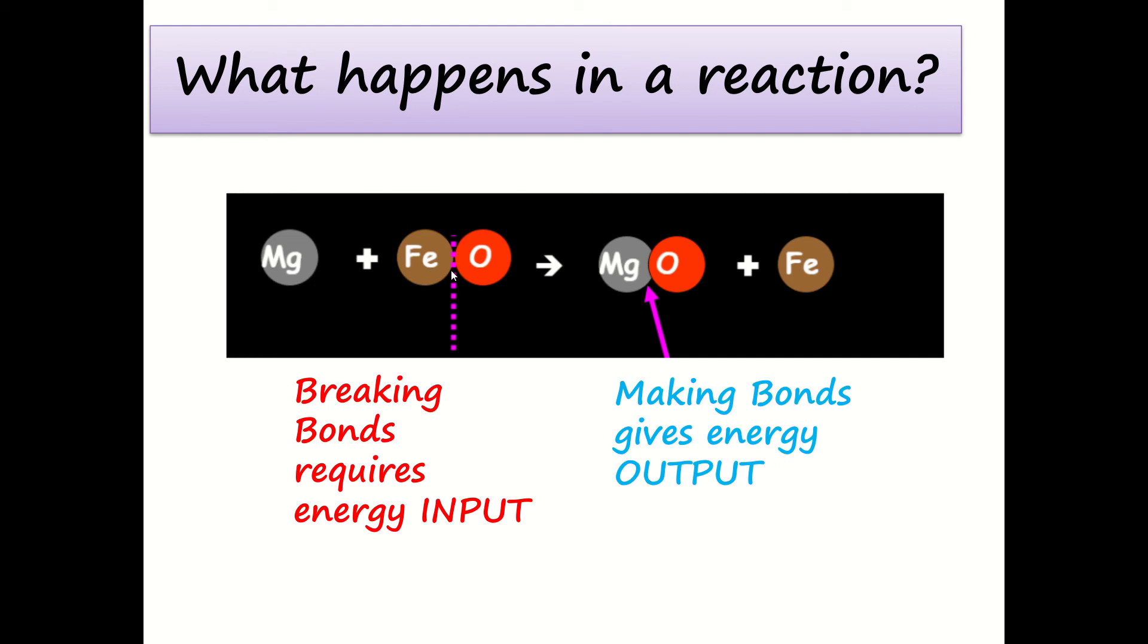Then once we've broke them, we are rearranging the atoms and we are forming some new products. So look at our products now. We've got magnesium oxide and we've got iron. So we've made new bonds between the magnesium and the oxygen. Now, making bonds gives energy back out. So it gives us an output of energy. So if we knew the values of these, we would be able to tell how much energy we either got out of a reaction or how much energy we'd have to put in in total. More about that in a later lesson.